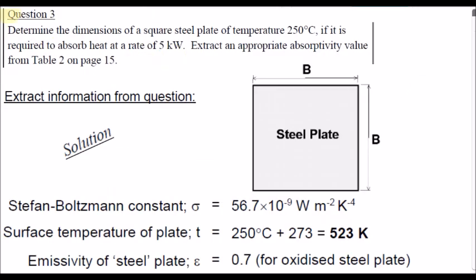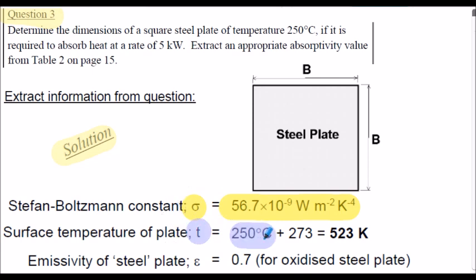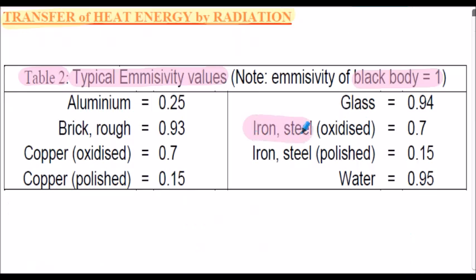Here's the beginning of the solution for question 3, extracting the information. We know the Stefan-Boltzmann constant. The surface temperature of the plate T is 250 degrees C, converted into K. From table 2, the emissivity of the steel plate is 0.7 — this is for an oxidised steel plate.